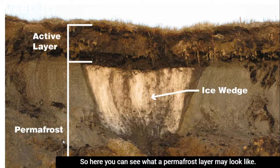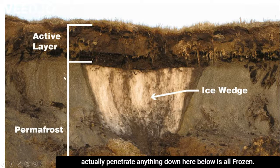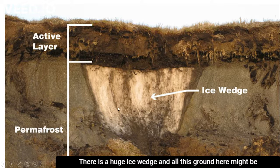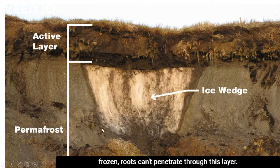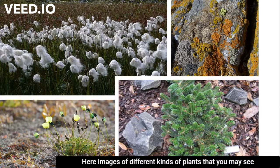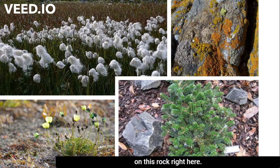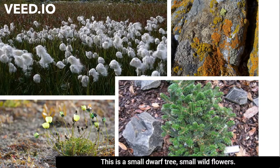Here you can see what a permafrost layer may look like. This may be just the active layer of soil that plant roots can actually penetrate, but anything below is all frozen. There's a huge ice wedge and all the ground below might be frozen — roots can't penetrate through there. Here are images of different kinds of plants you may see growing in the tundra: moss and lichen growing on rock, a small dwarf tree, and small wildflowers.